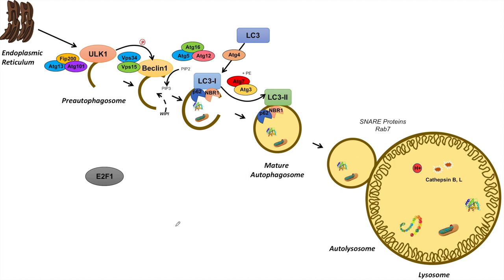E2F1 transcriptionally upregulates a few very important proteins in the macroautophagy pathway. One of them is ULK1, which is involved in preautophagosomal initiation. Another important protein E2F1 upregulates is LC3, and another is ATG5. E2F1 can upregulate preautophagosomal initiation and formation, and the critically important LC3-1, the microtubule-associated protein involved in elongation and maturation of the autophagosome.